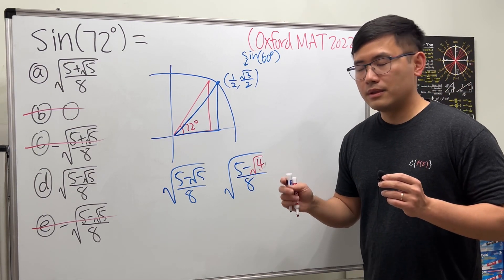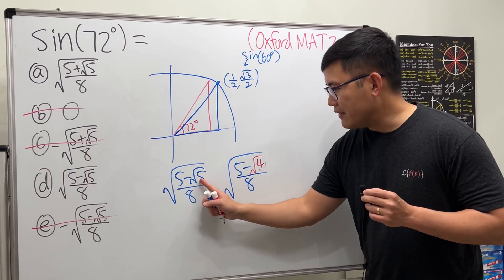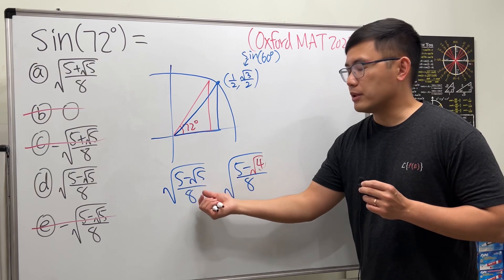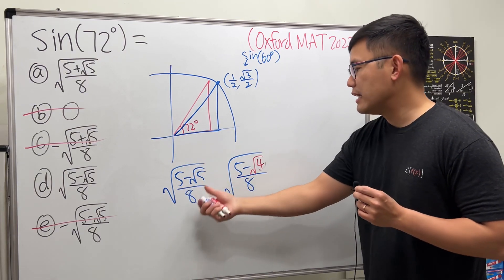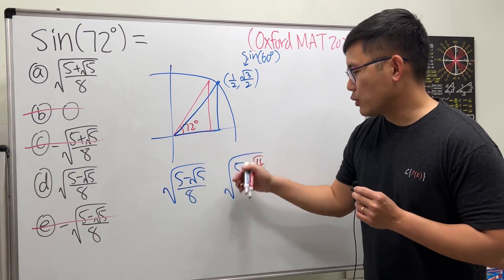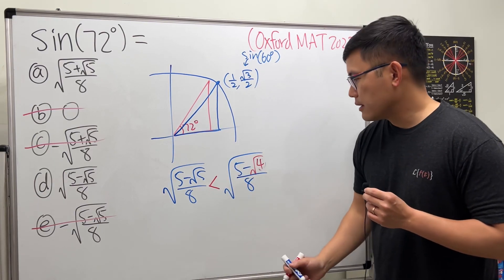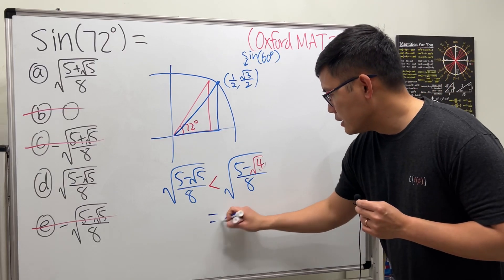But what's the inequality? We know √5 is bigger than √4, and we're subtracting a bigger number, so the whole result is smaller than this. And the outside square root is just an increasing function, so it doesn't matter. We know this is going to be a less than sign.